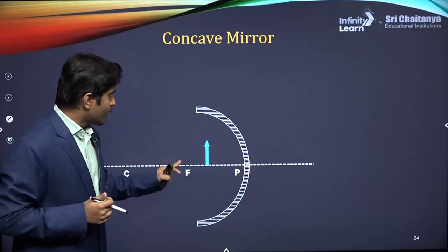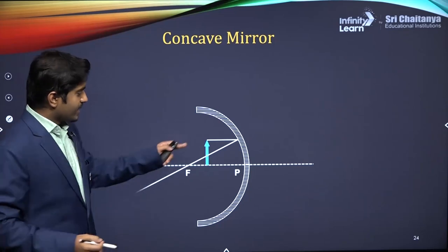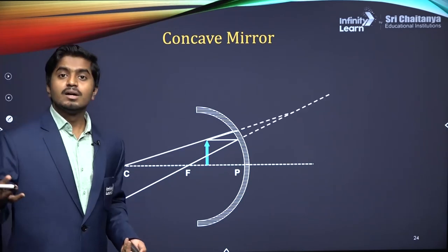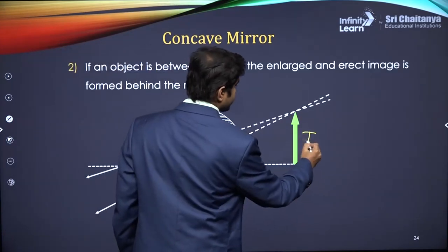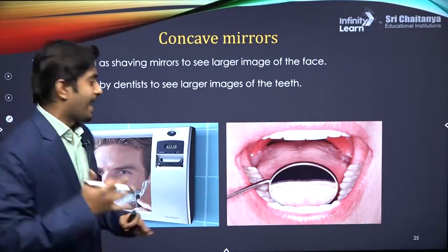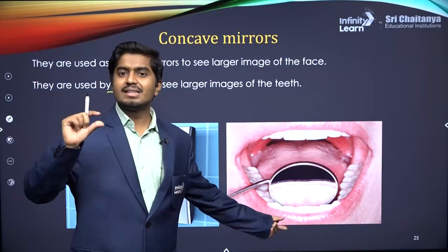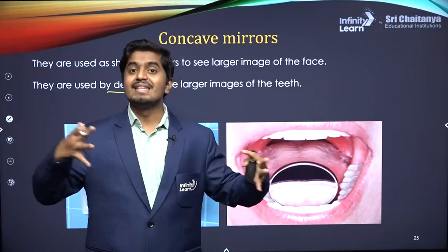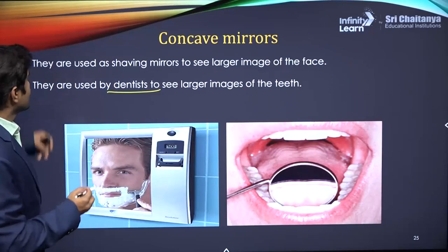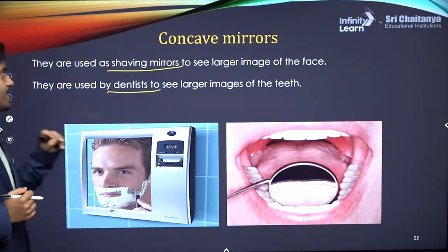Application two: placing the object between focus and pole gives an enlarged, virtual, and erect image. This property is used by dentists to get a larger image of the teeth — the teeth are small but the concave mirror gives an enlarged image, helping dentists identify cavities. It is also used in shaving mirrors so you can shave precisely without cuts to the skin.